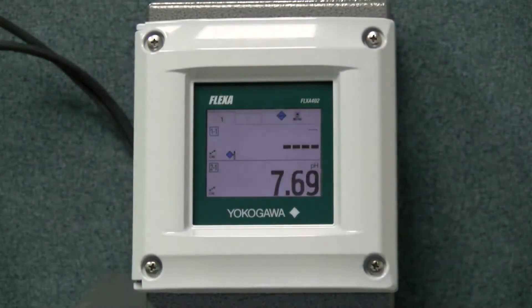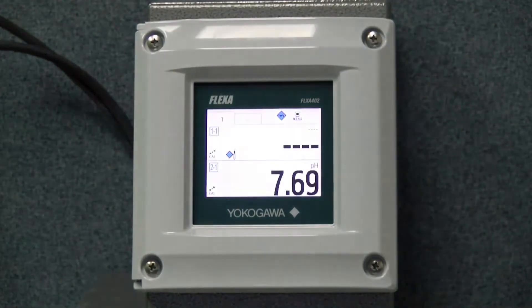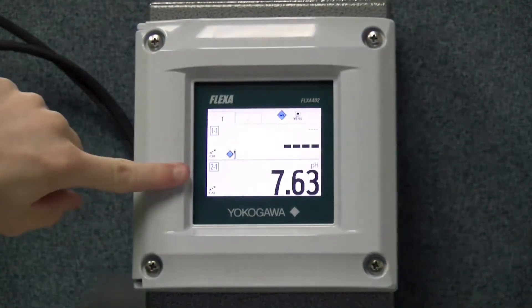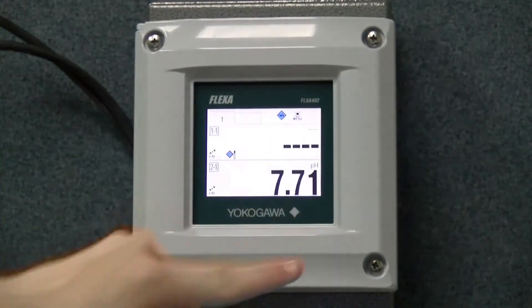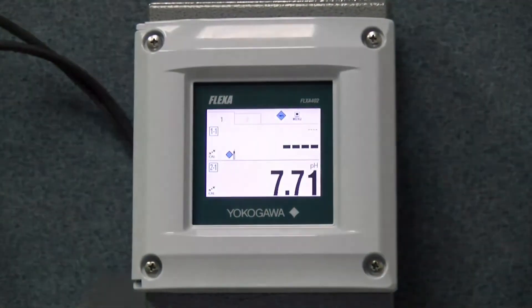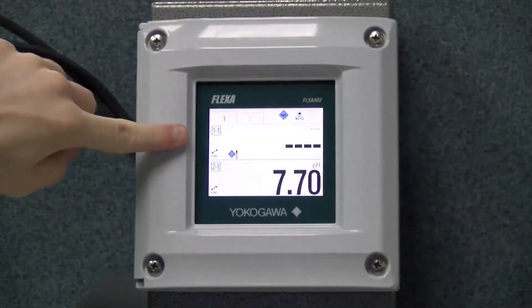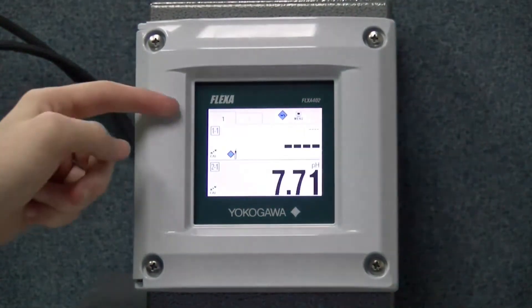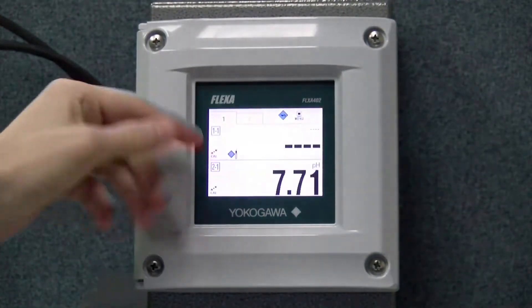Alright, I have now powered on the Flexa, and as you can see, the second module slot has the pH reading in as the sensor is correctly wired. And as you can see, there is no device in the first module, which is why it is showing an error there and the screen is blinking.